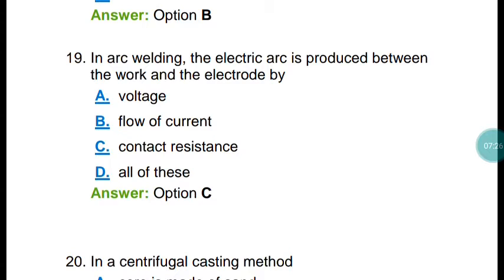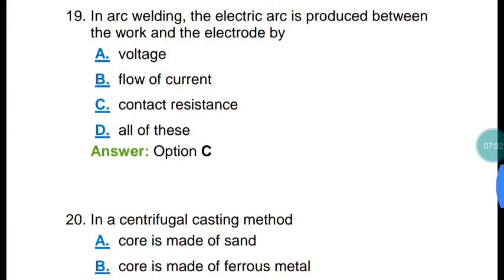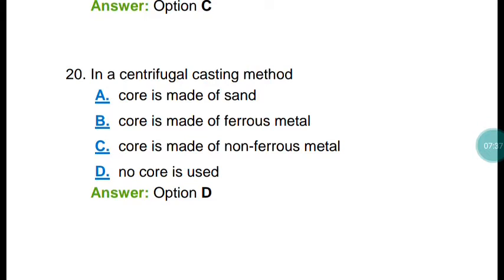Question number nineteen: in arc welding, the electric arc is produced between the work and electrode by using contact resistance. The correct answer is option C.